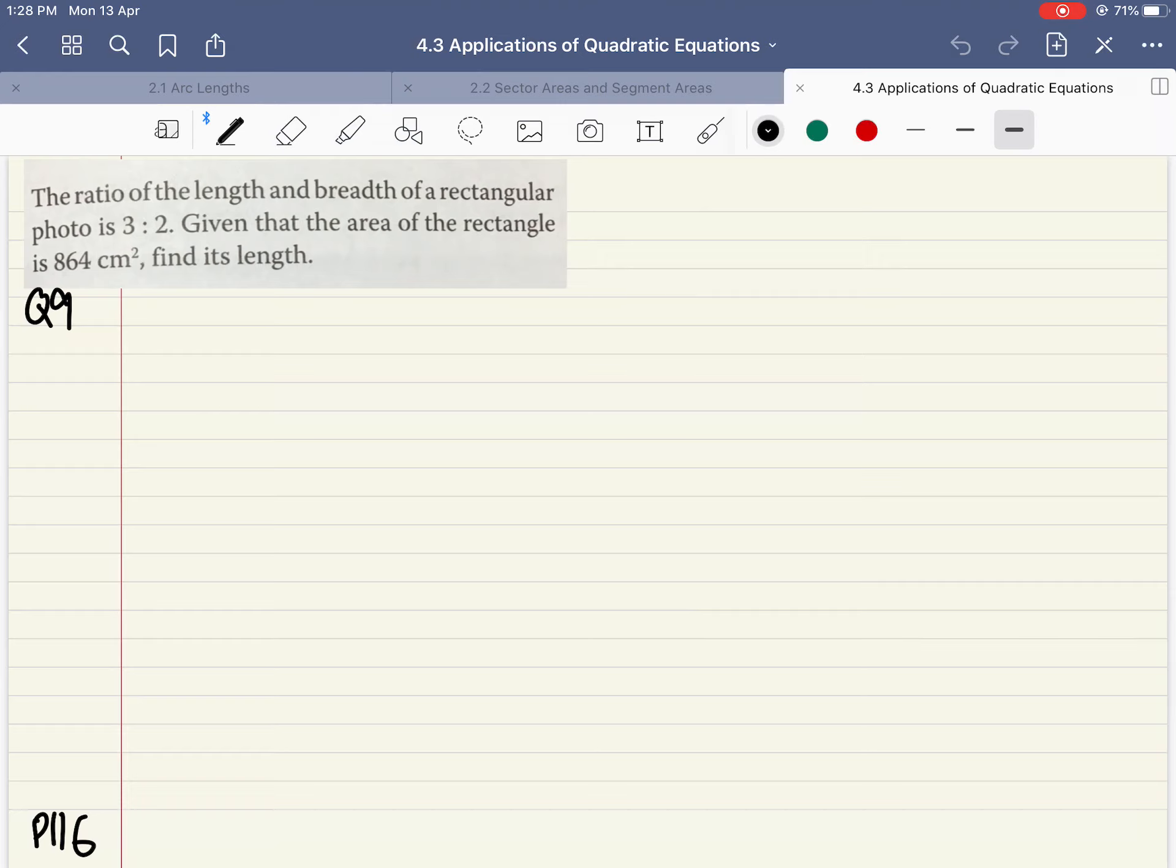Alright, today I'm going to cover some examples from exercise 4.3, just two examples actually. The first question I'm going to cover is on page 116 of your 2A textbook. For this we have the ratio of the length and breadth for a rectangular photo frame is 3 to 2, given the area.